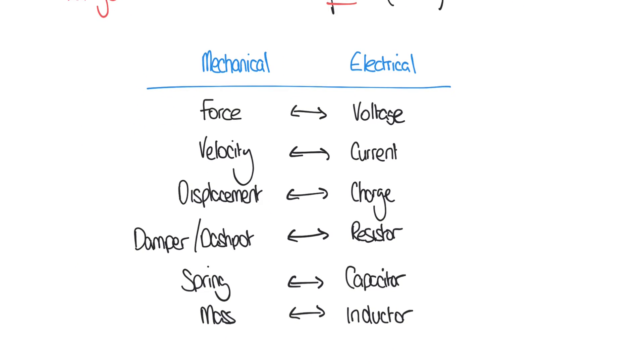So by this point, you might be happy with some of these analogies. Some of them might make sense to you. But the last entry looks a bit strange. What does an inductor, which is an electrical component, it's basically a coil of wire. What does an inductor have to do with mass in mechanical engineering?